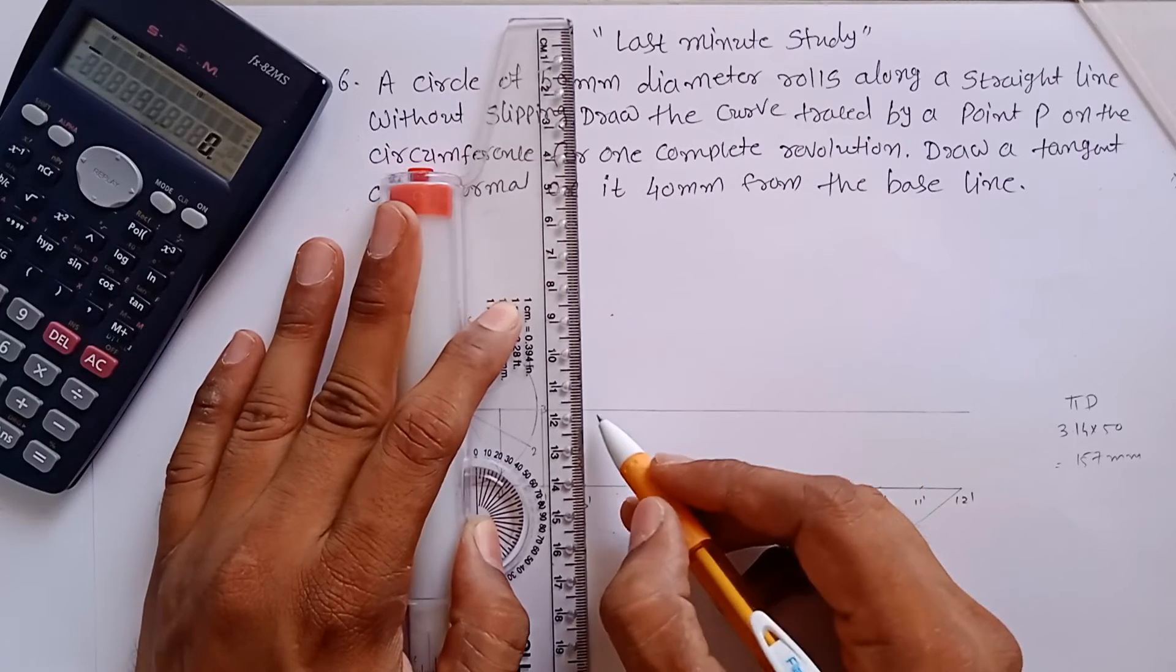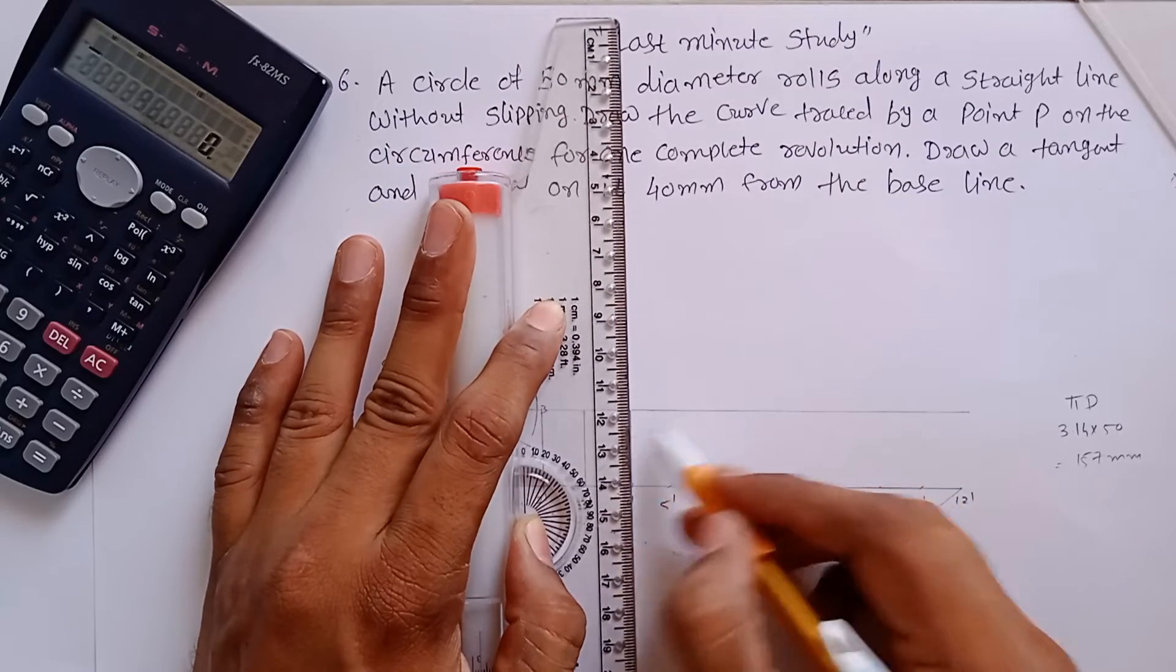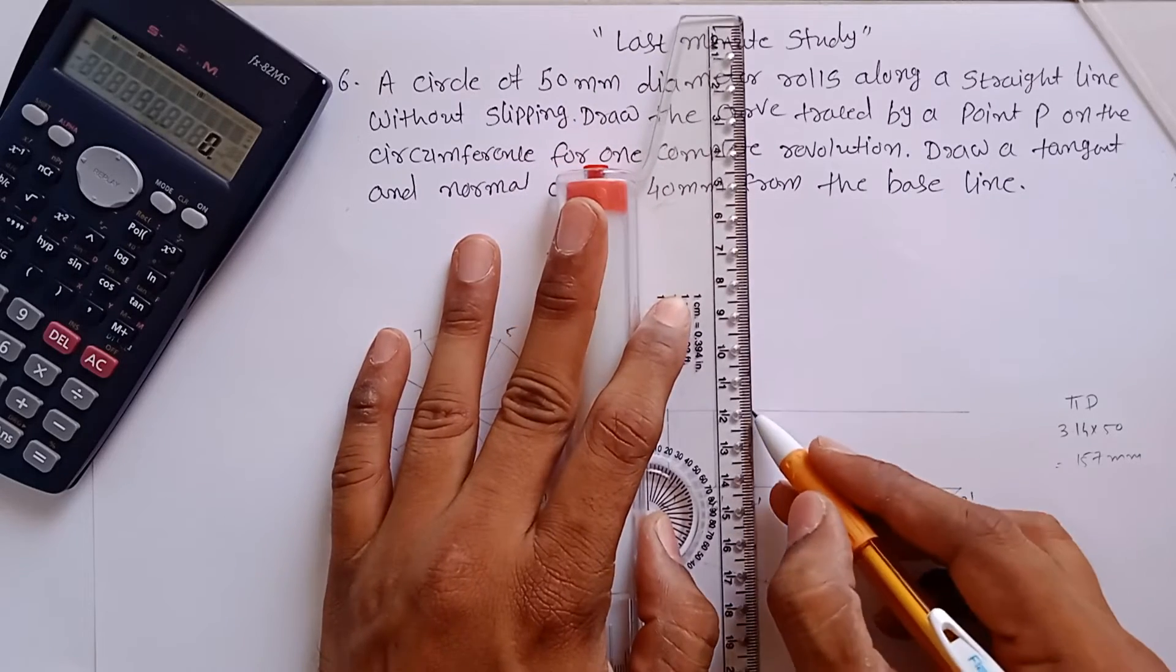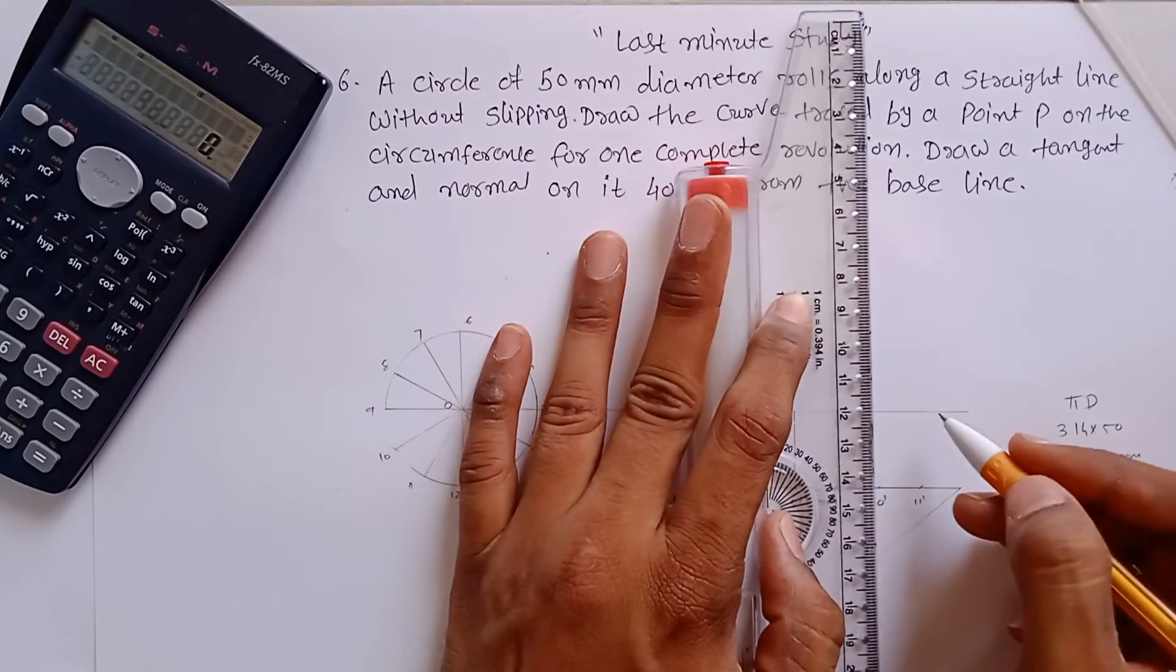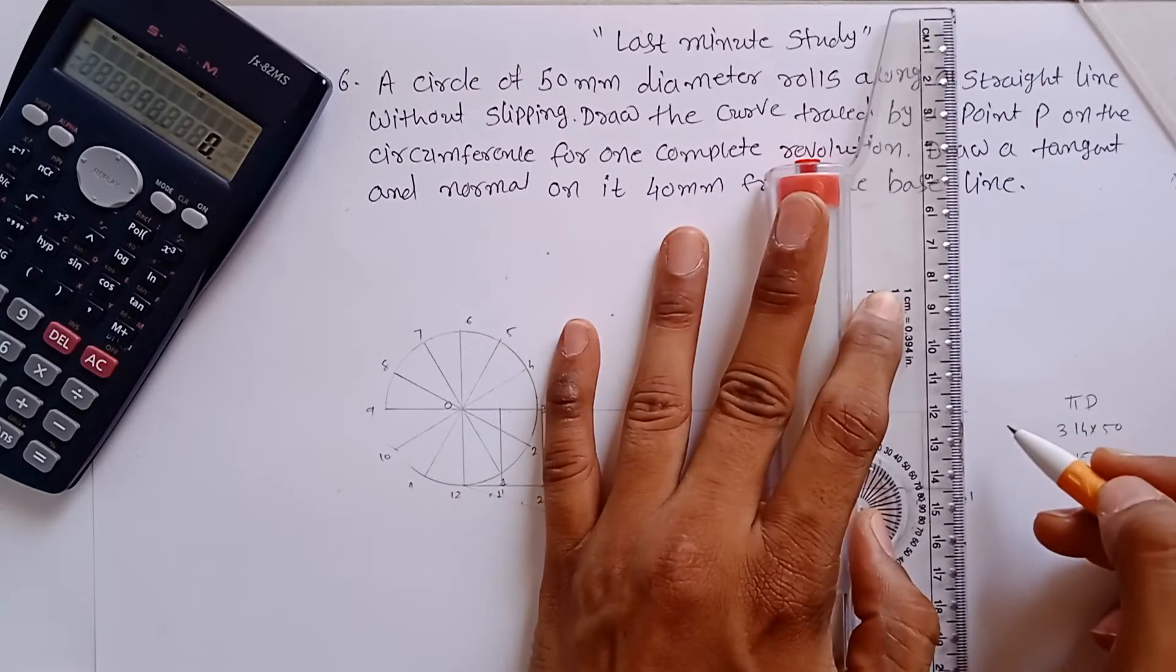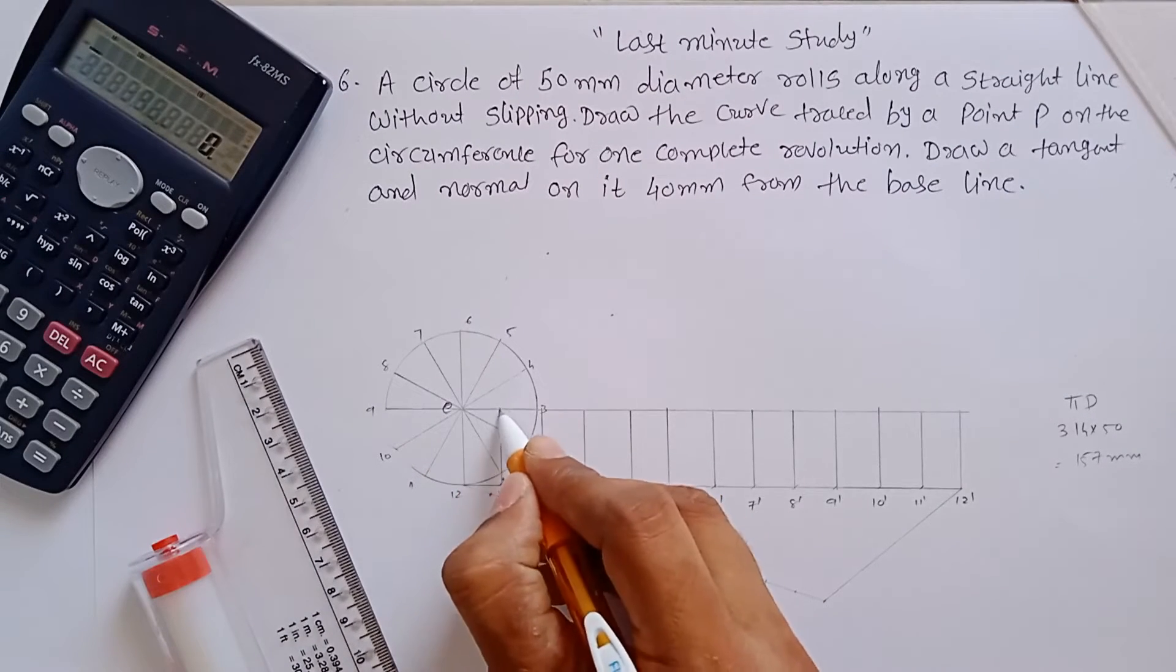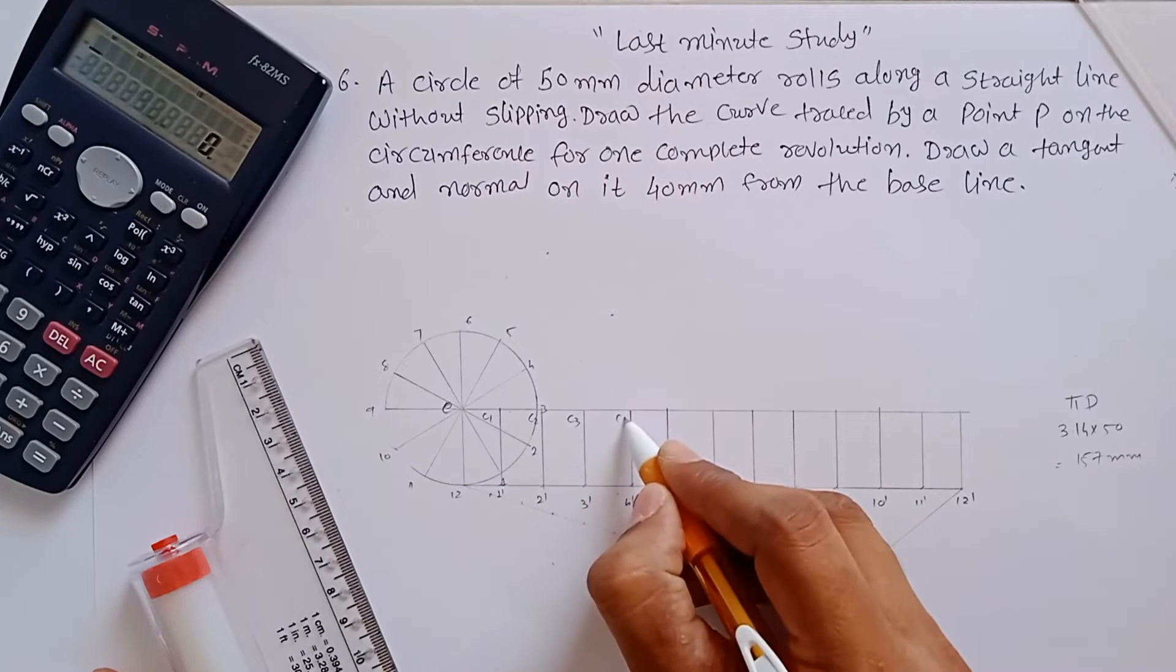We are going to transfer all our points on the center line. If this is a C point, because this is a center, so this point is C1, this is C2, C3, likewise. These are the center lines.